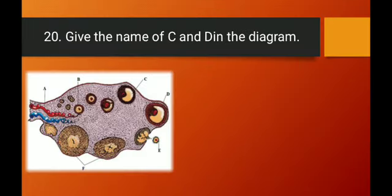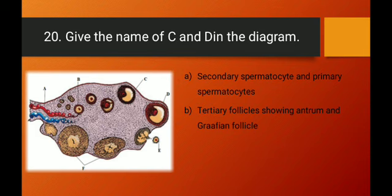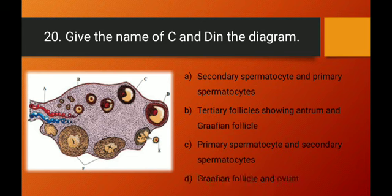Question number twenty: identify C and D in the diagram. Option A (secondary spermatocyte and primary spermatocyte) is wrong. Option B — C is a tertiary follicle showing antrum, and D is a Graafian follicle — is likely correct, as a space (antrum) is visible in C and structure D is just before ovum release. Option B is the right answer.